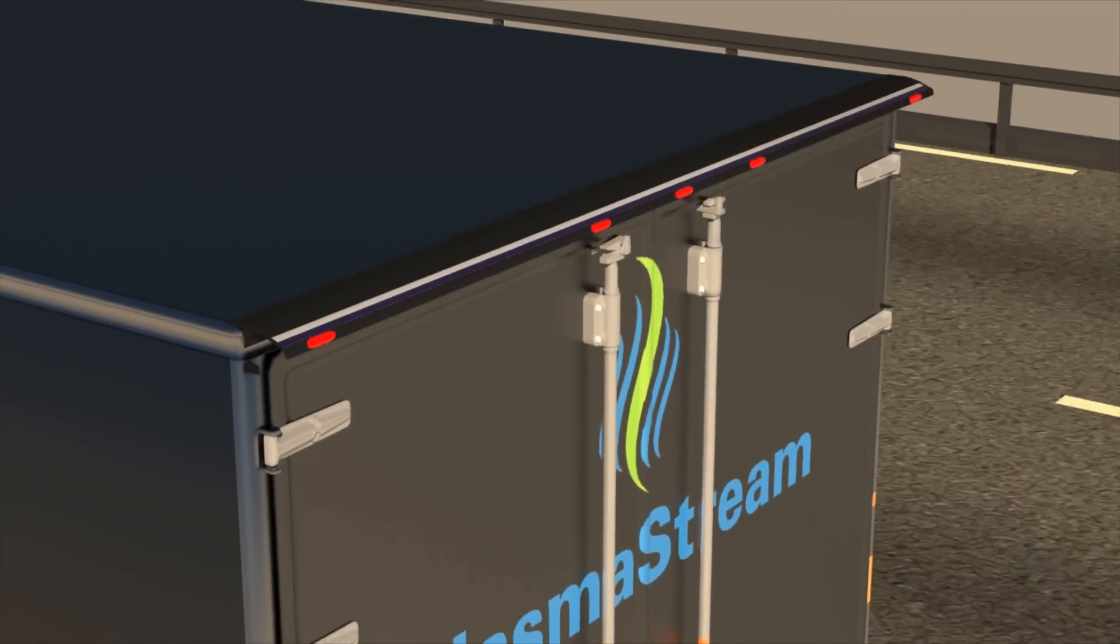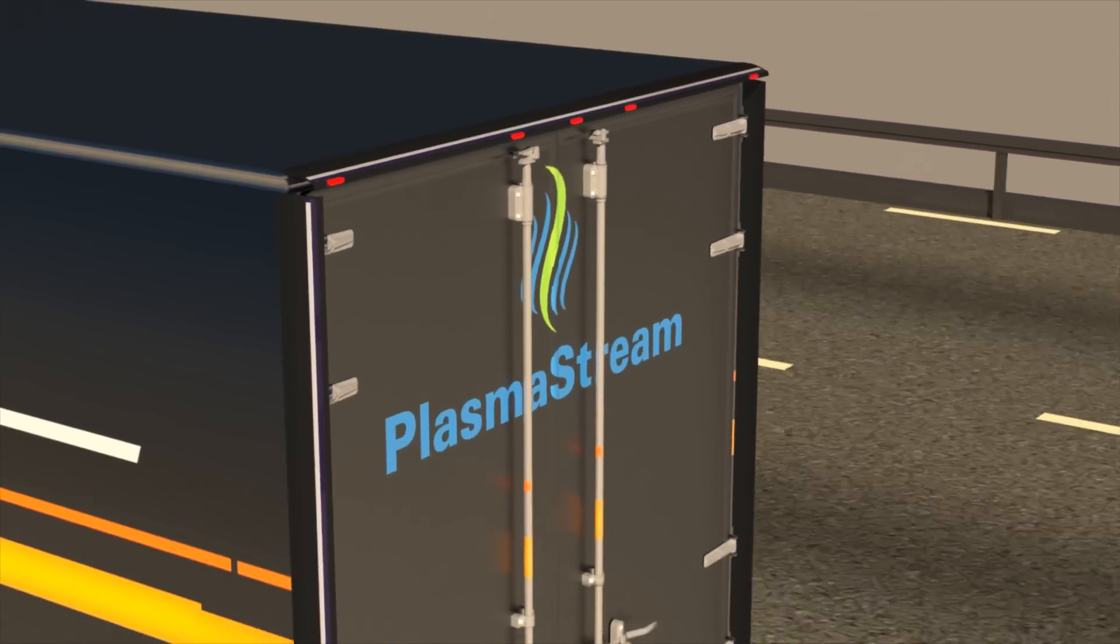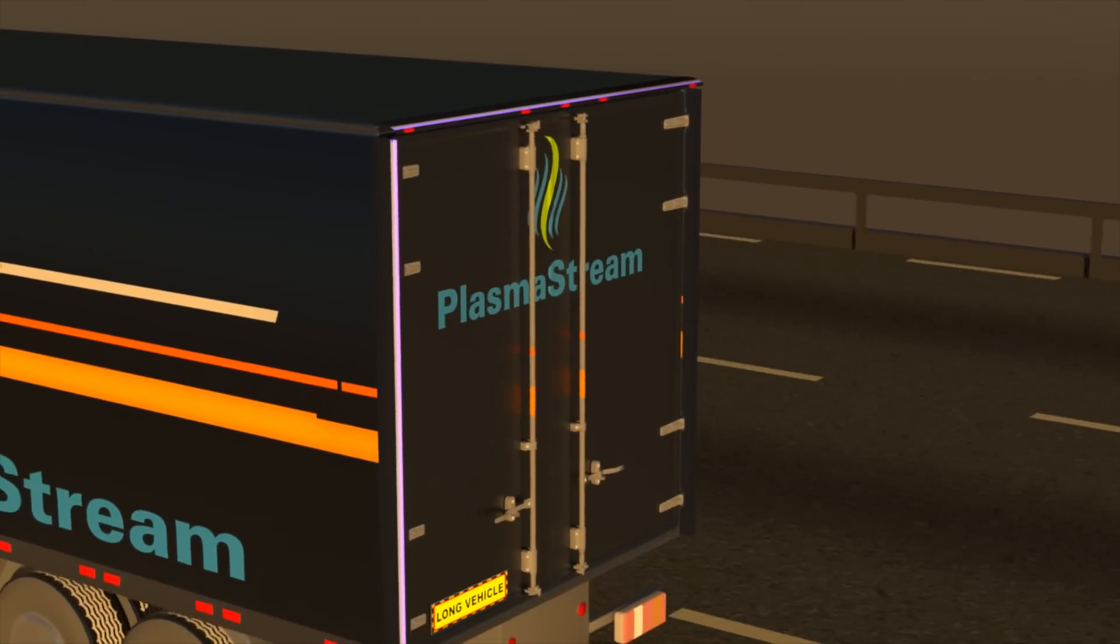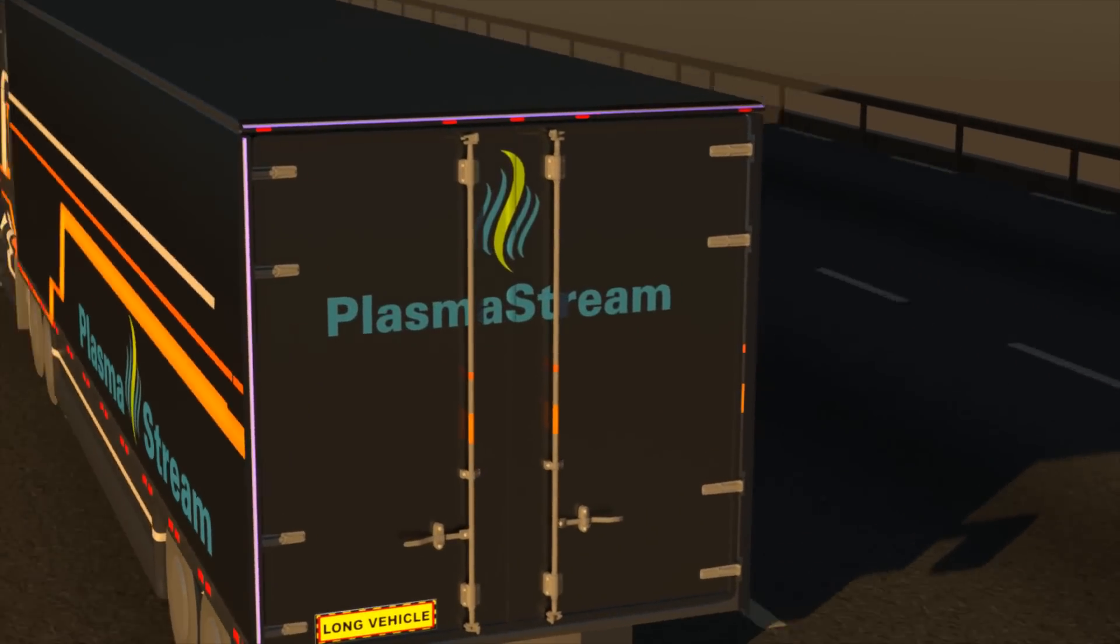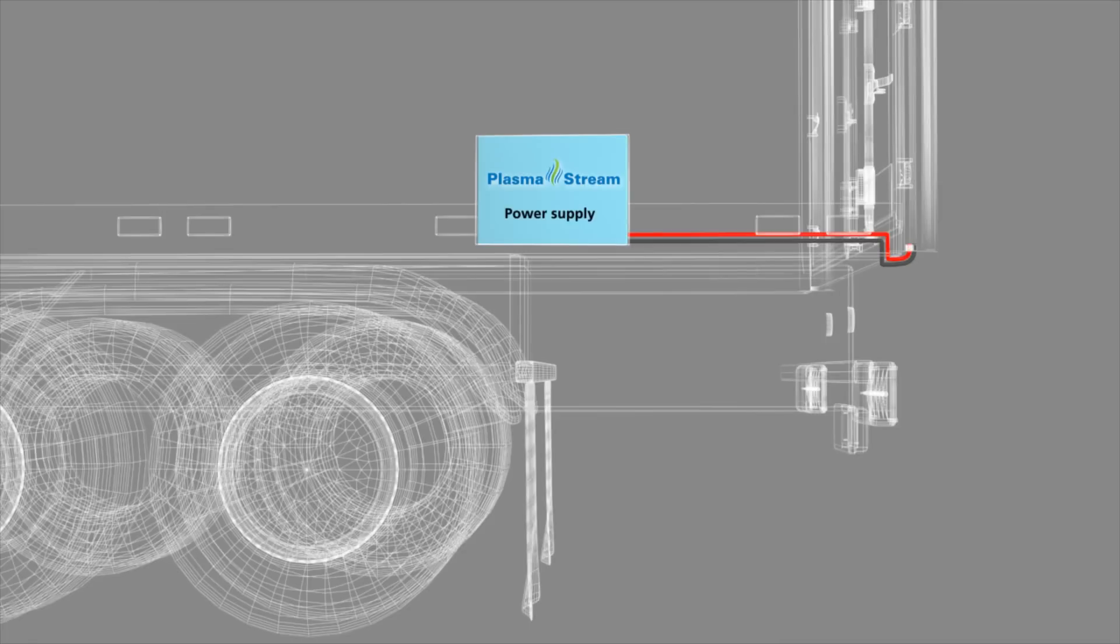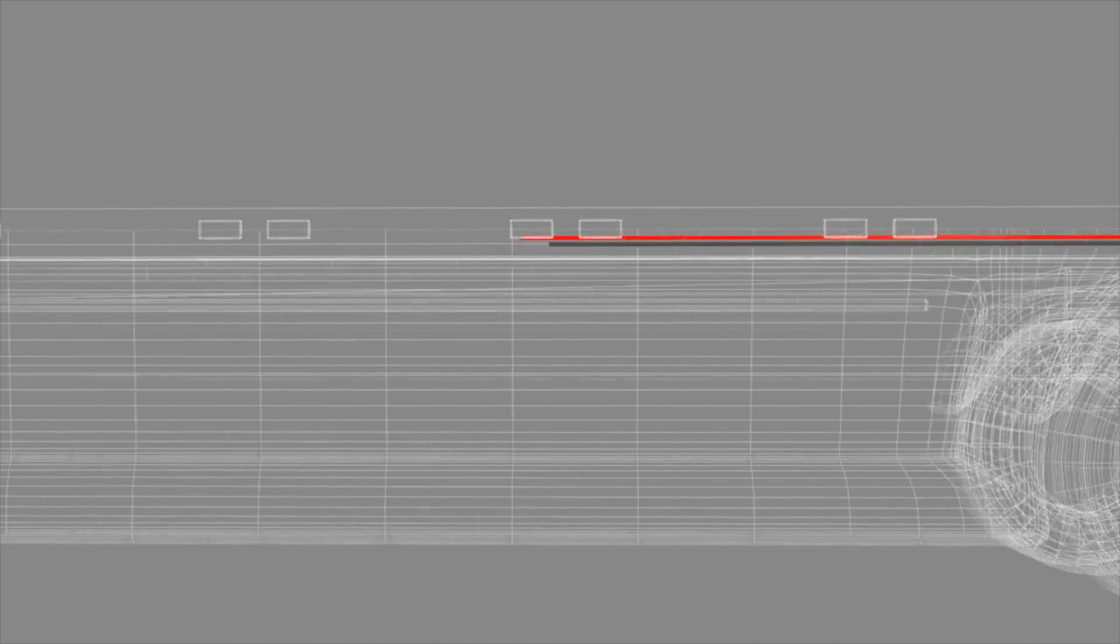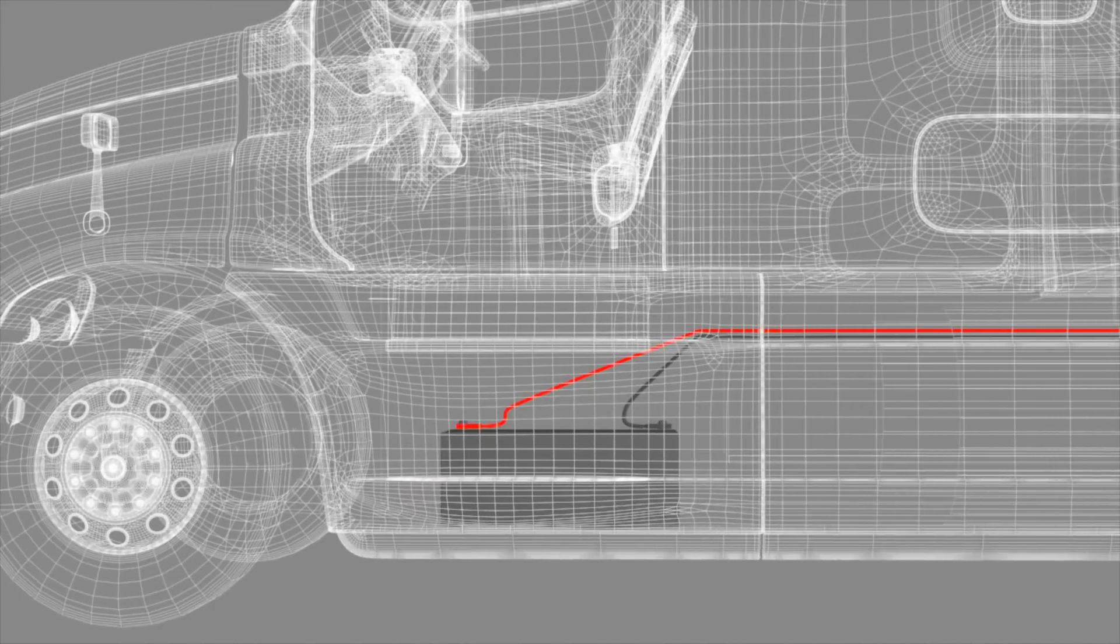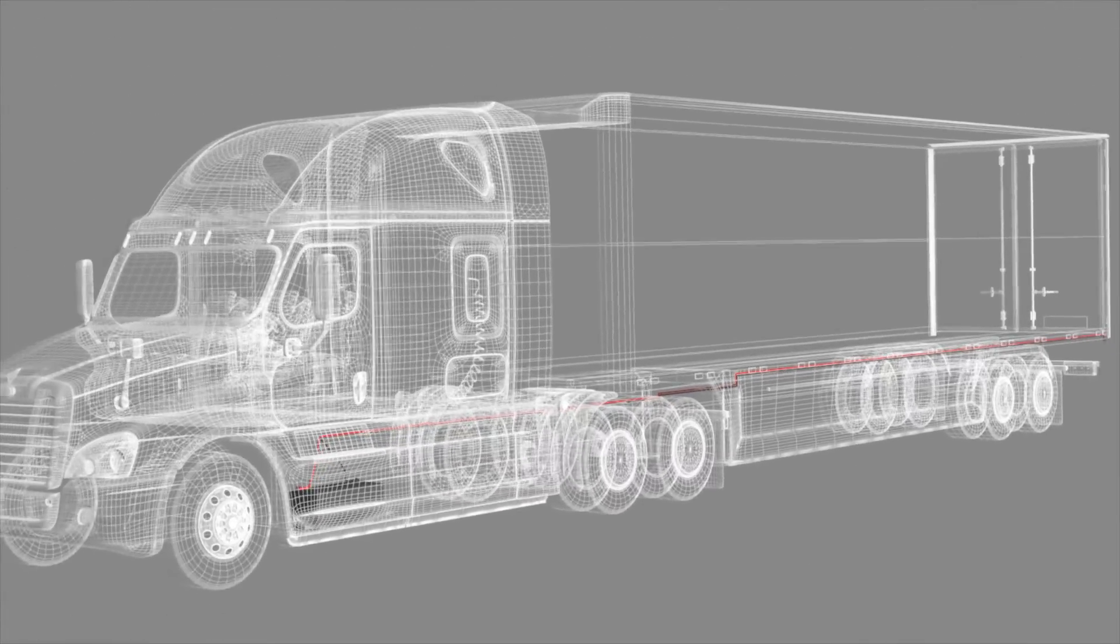The plasma actuator system is easy to install and will be mounted on the aft of the trailer along the top as well as the two side edges. The assembly is connected to the output of a proprietary power supply that is mounted on the trailer. The input of the power supply is connected to a vehicle battery power supply circuit on the trailer.